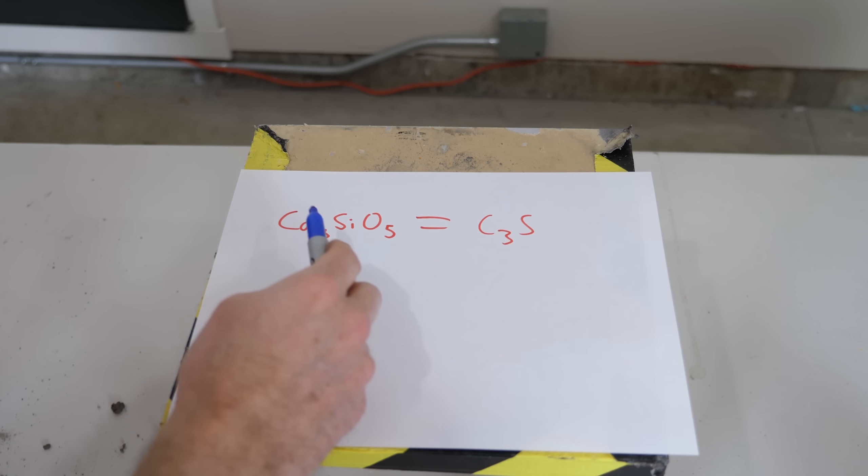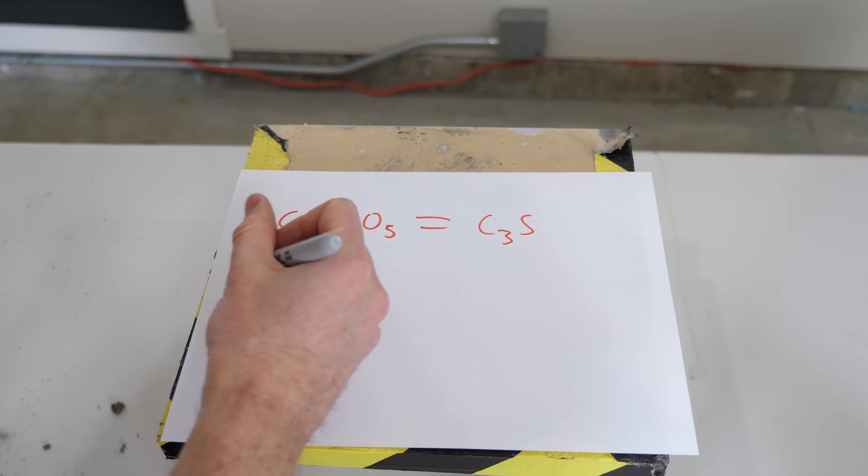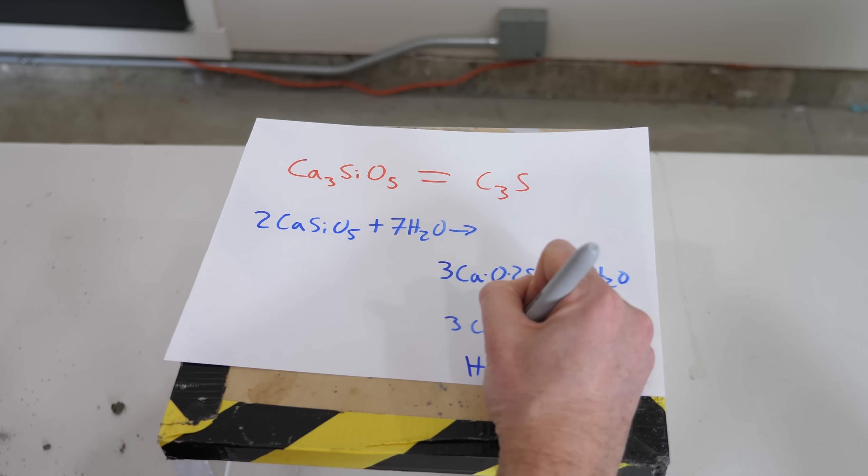Now, this tricalcium silicate reacts with water, and it's called hydration. And the chemical reaction when it reacts with water is this. So as soon as you add water to cement, it rapidly reacts with the water to release these calcium atoms and these hydroxide ions here. So the pH quickly rises to above 12 as soon as you add water to cement. And this reaction also produces heat.